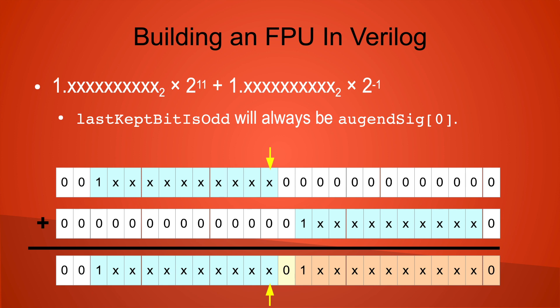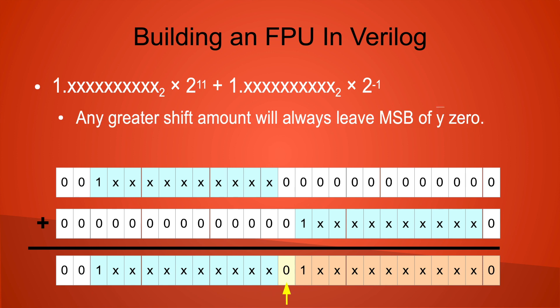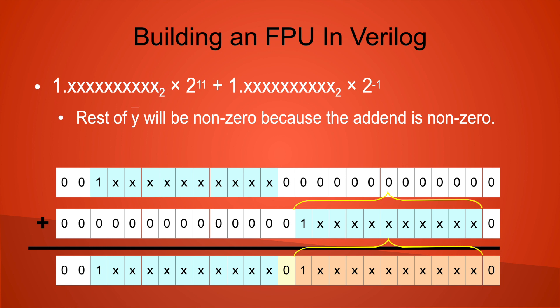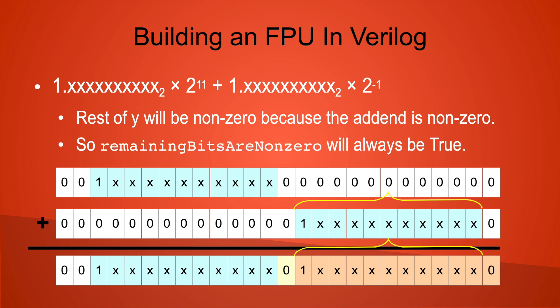This bit becomes 'last kept bit is odd' in the rounding module. For any larger shift amount, the value of this bit will never change. We can also see that the most significant bit of Y-bar is 0, and it will remain 0 for any larger shift amount. This bit is used as the 'deciding bit is 1' value, so for any larger shift amount this flag will always be false. The remainder of Y-bar will have all of the bits of the addend significand. Because the most significant bit of the addend will always be 1, the remainder of Y-bar will never be 0. Consequently, the flag 'remaining bits are non-zero' will always be true for any larger shift amount. From this you should be able to see that even when the operands have the same sign and the significands are rounded, rounding still happens correctly.